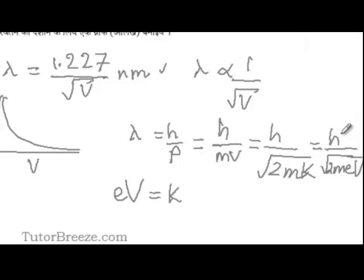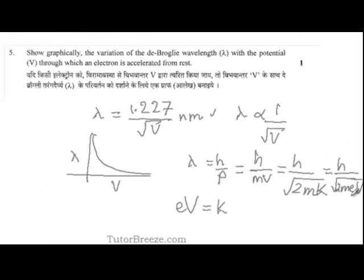Now Planck's constant, mass of the electron, charge of the electron are all constants. So putting in these values you will get this value which you get over here as the value for lambda.